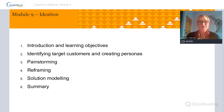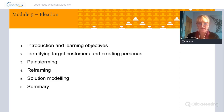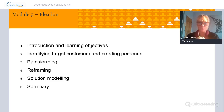We're going to move from personas to what I call the pain storming space - this is really about finding good tough questions and tough problems to be solved. Then we'll move into the reframing space, which for me is one of the most critical skills you can learn. From reframing we move to solution modeling, which is a really fun place to play. Then we'll finish up and talk about things to come in the next module.